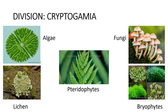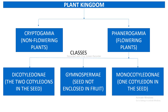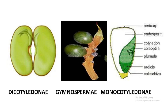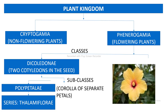Cryptogamia is divided into Algae, Fungi, Pteridophytes, Lichen, and Bryophytes, as shown in the figure. The plant kingdom is divided into two types: Cryptogamia (non-flowering plants) and Phanerogamia (flowering plants). Phanerogamia is further divided into three classes: Dicotyledonae (two cotyledons in the seed), Gymnospermae (seed not enclosed in fruit), and Monocotyledonae (one cotyledon in the seed), all as shown in the figure.